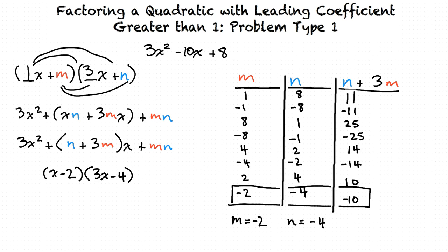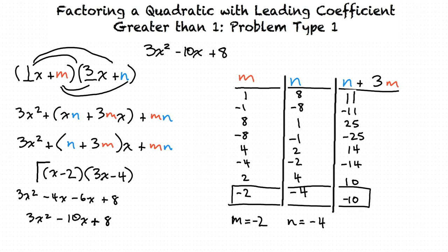Are those the final factors? Check your answer by multiplying these two factors out. Multiplying the first terms gives 3x squared, the outer terms give negative 4x, the inner terms give negative 6x, and the last terms give 8. After combining negative 4x with negative 6x, the result is 3x squared minus 10x plus 8 — so that's right. We broke up the leading coefficient into factors 1 and 3, which became the x coefficients. Then using m and n, we found that n plus 3m equals negative 10 and mn equals 8, and by listing possible factor pairs of 8 we found the two values that worked, giving us our final factors.